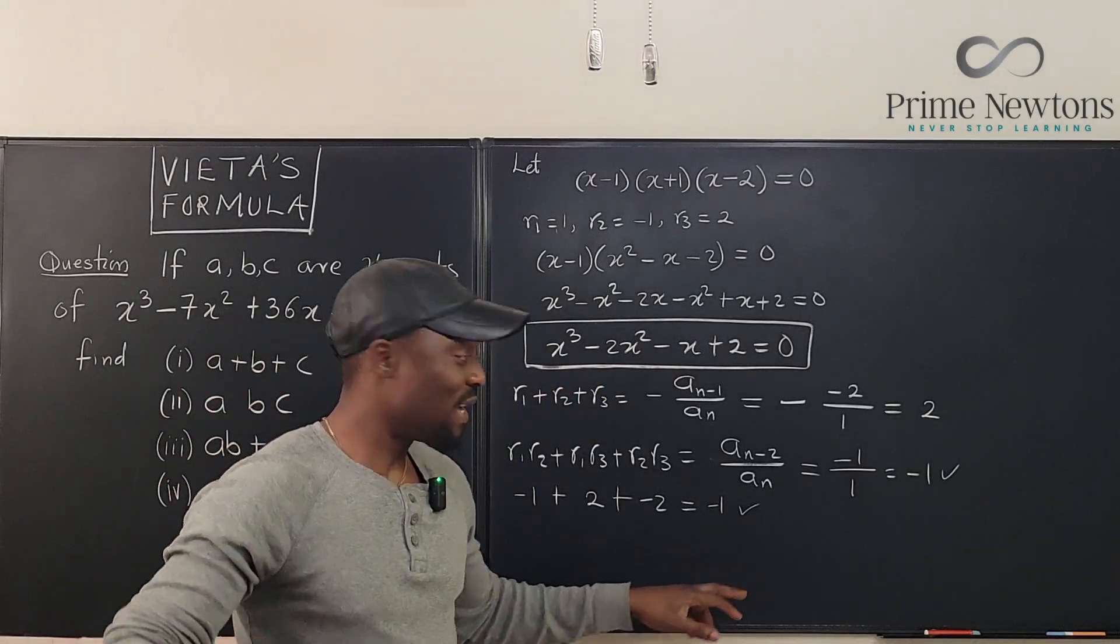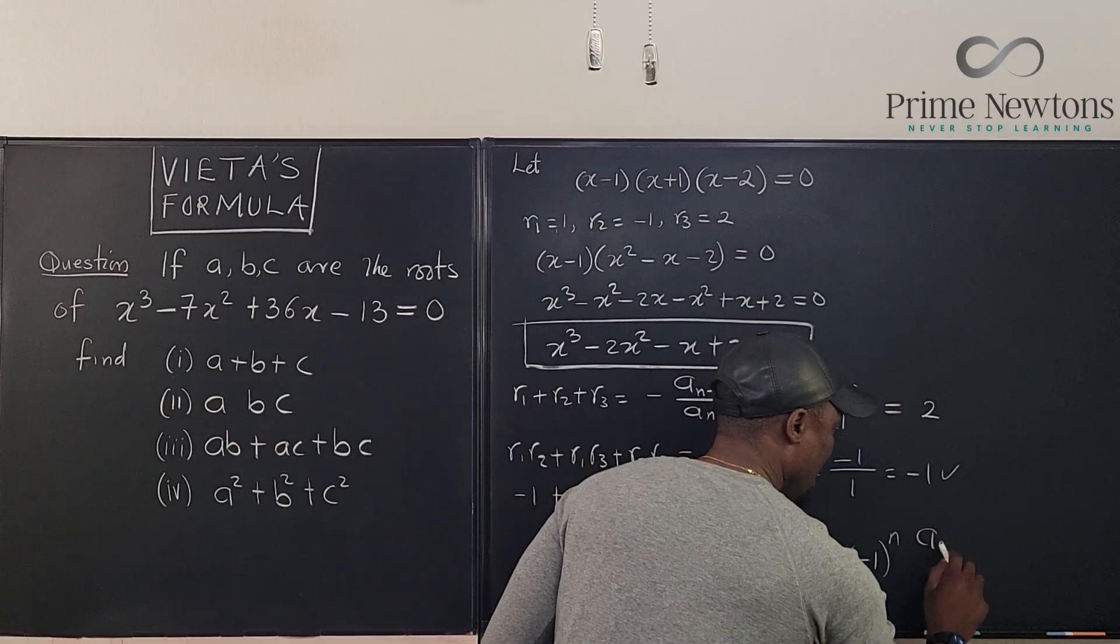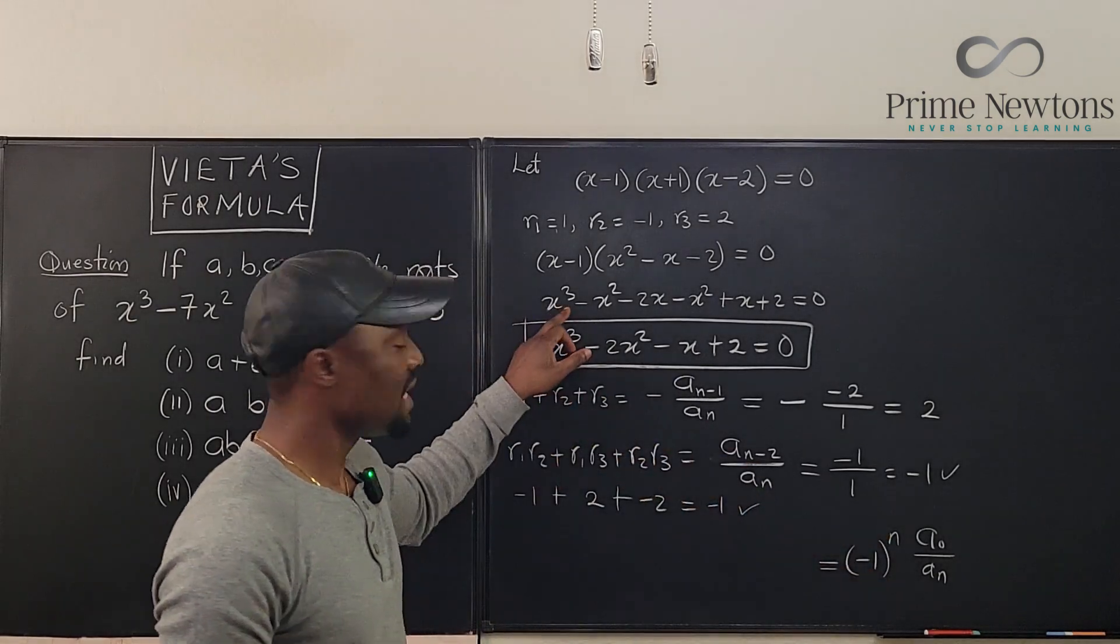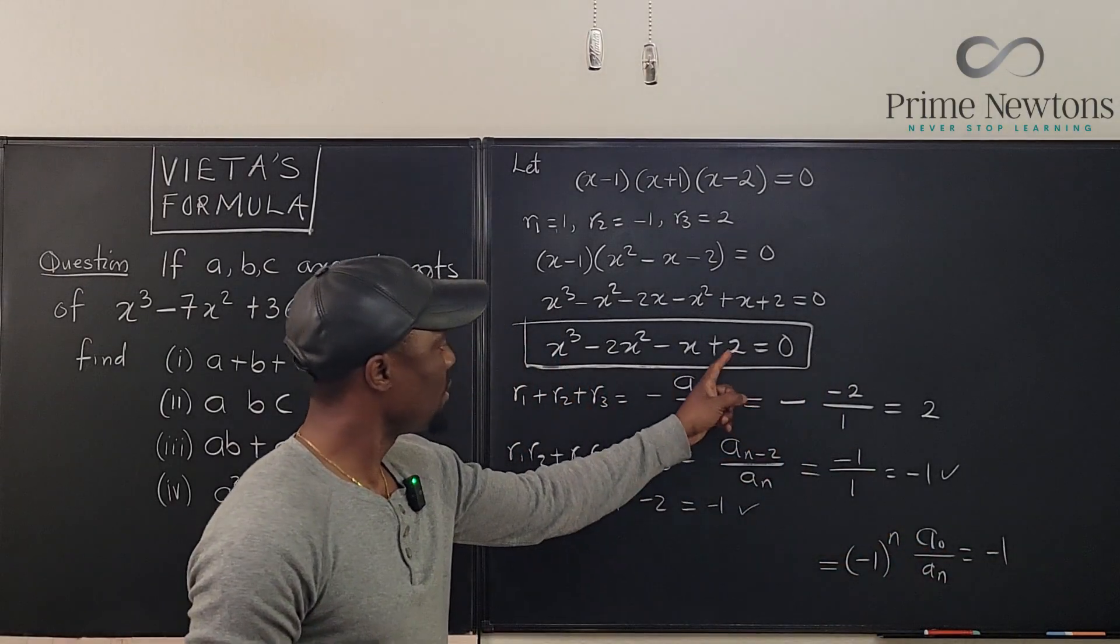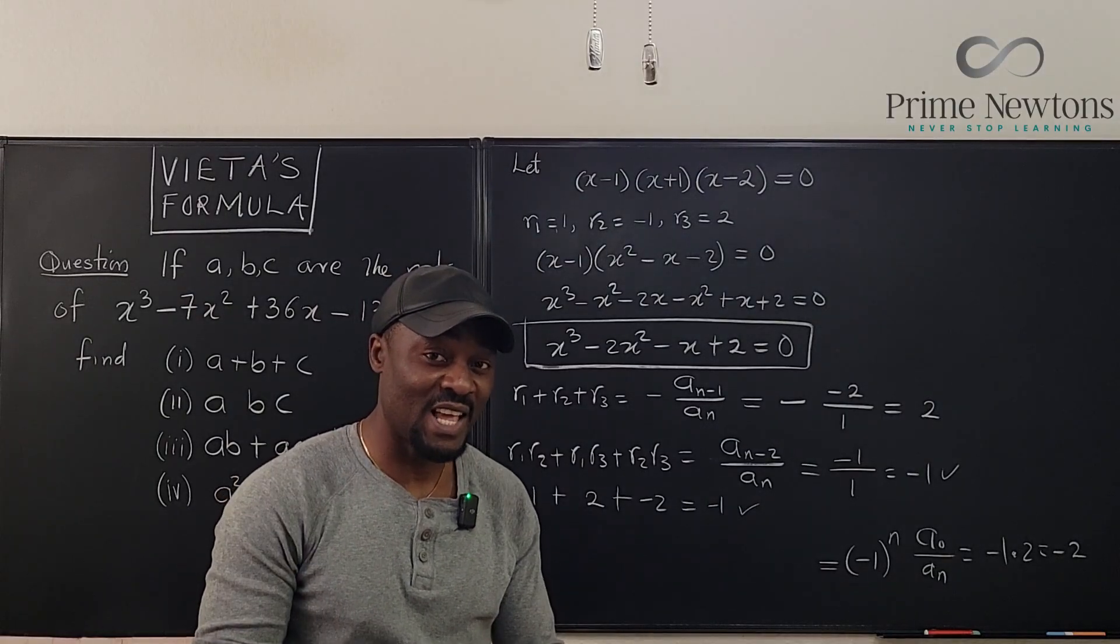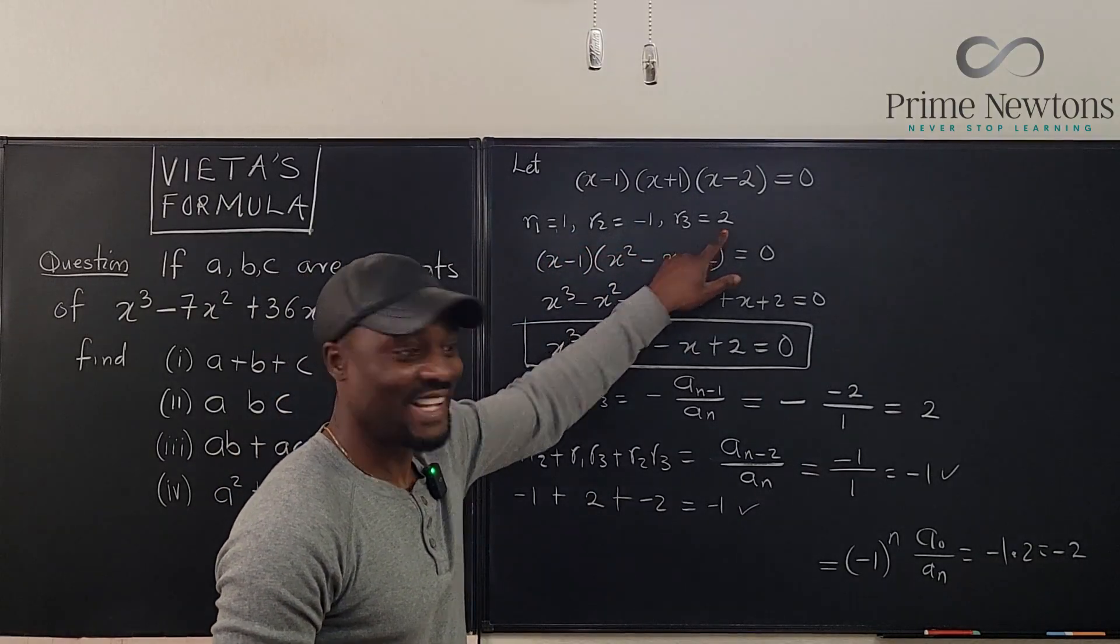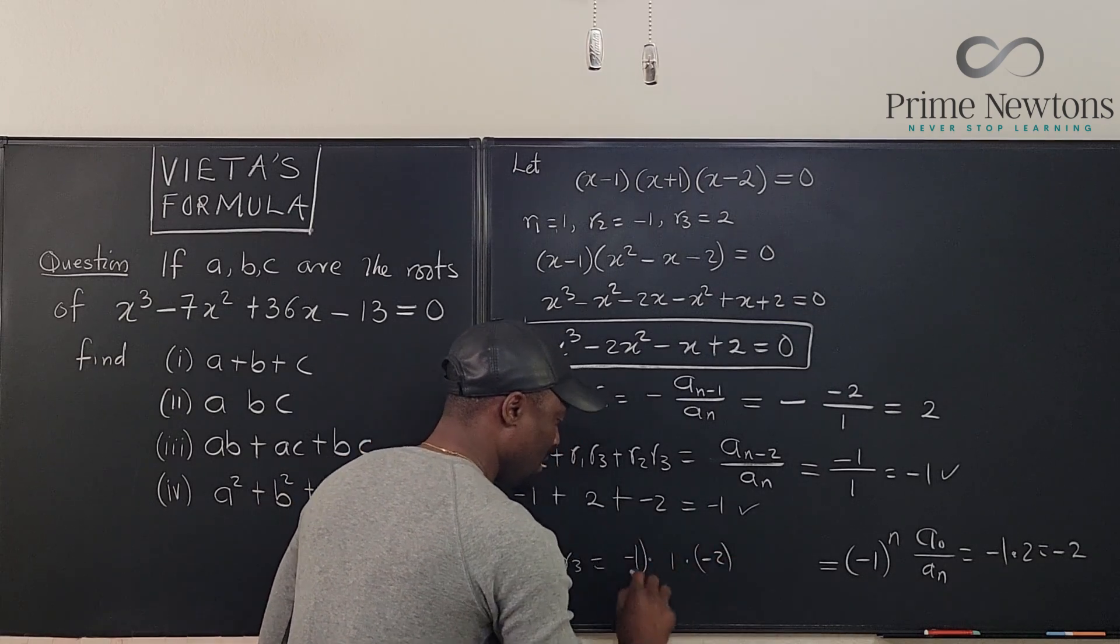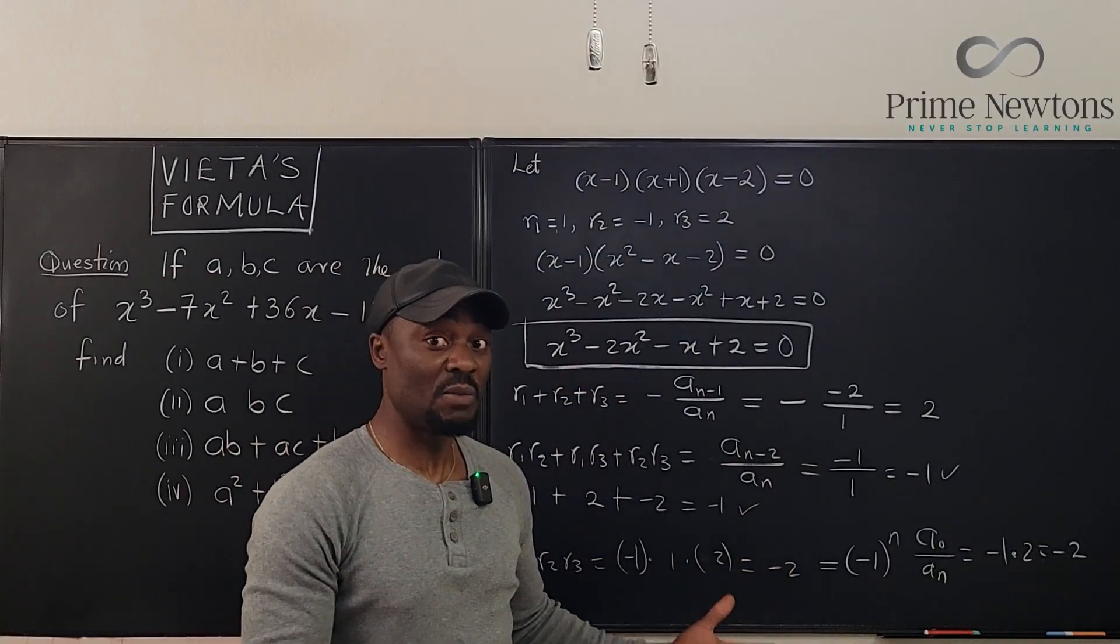And remember what we said, that the final one is going to be, let's write the answer first. It's supposed to be minus 1 raised to power n times a naught over a n. So if we use this formula for the product of all of them, we're supposed to have minus 1 raised to power n. Our n here is 3. So that would be minus 1 raised to power 3, which is minus 1. And then the constant term is 2 divided by 1. So times 2, which is minus 2. So we should get minus 2 when we multiply everything together. Is that going to happen? It's going to be 1 times minus 1 times 2. Well, that's equal to minus 2. So r1, r2, r3 equals minus 1 times 1 times 2, which gives us minus 2. Okay, so we have verified using all of this that Vieta's formula actually works.